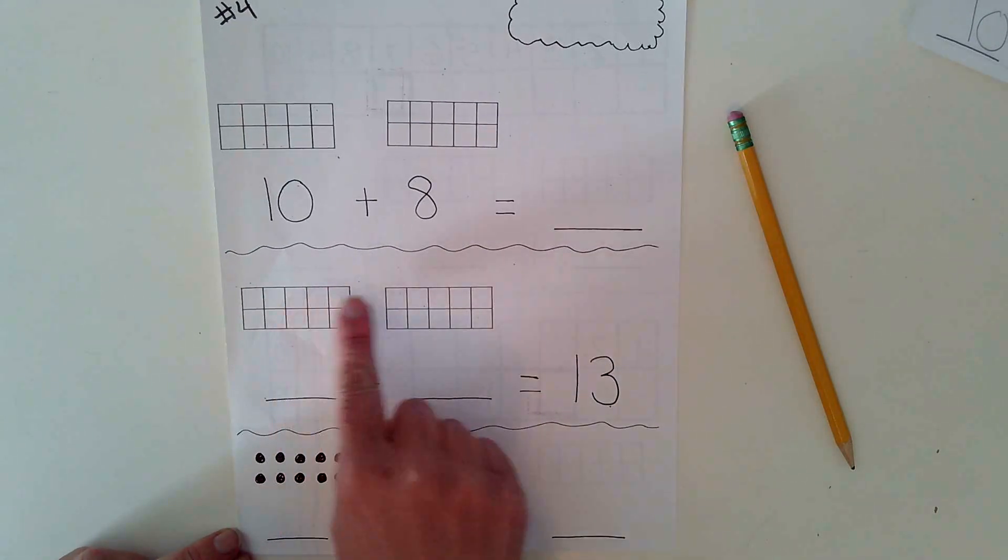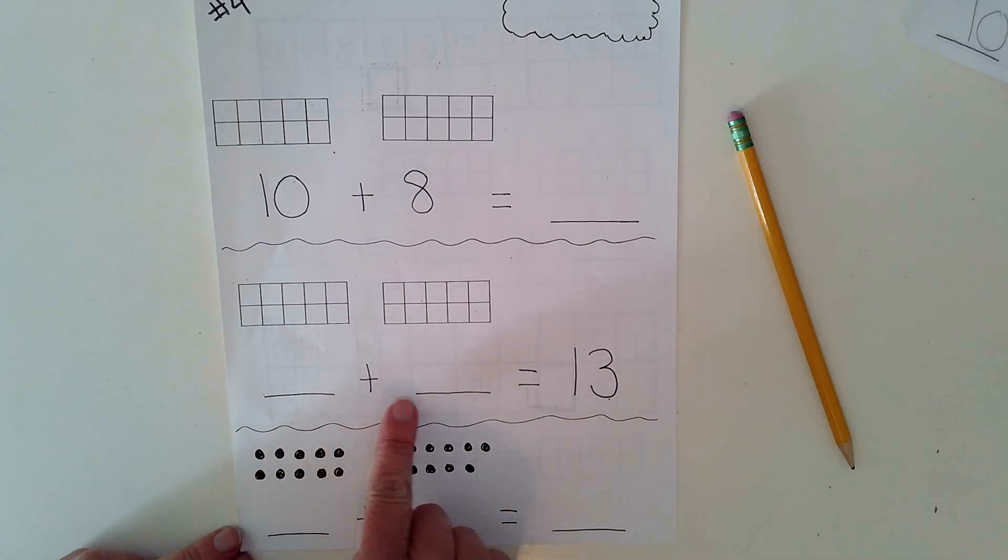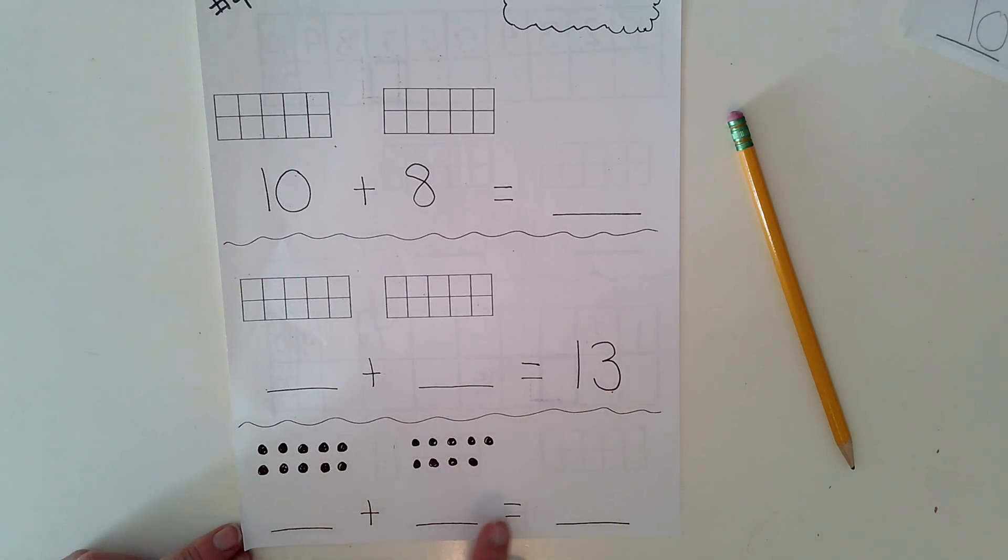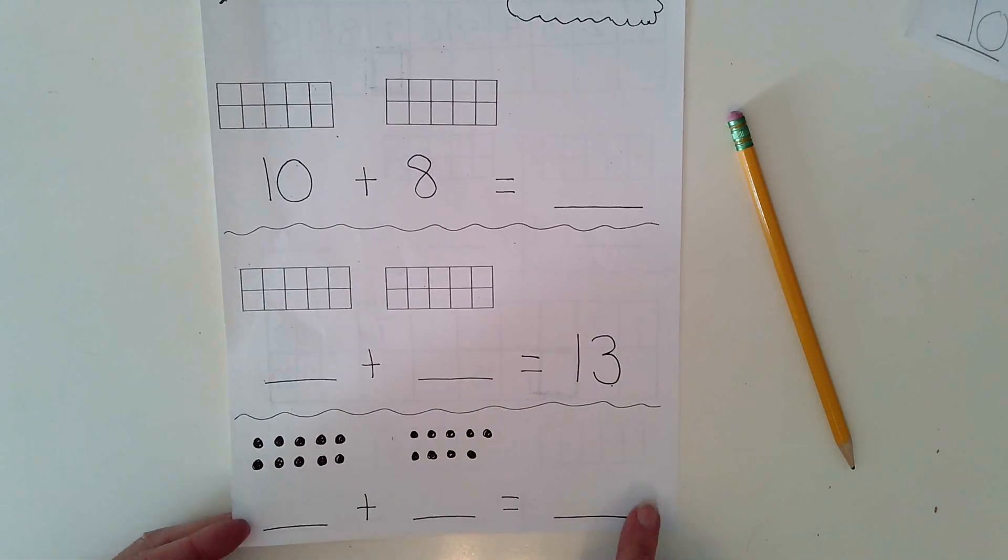Here you're drawing 13 dots and then you'll say hmm plus hmm equals 13. Here you are writing the addition sentence to make a teen number.